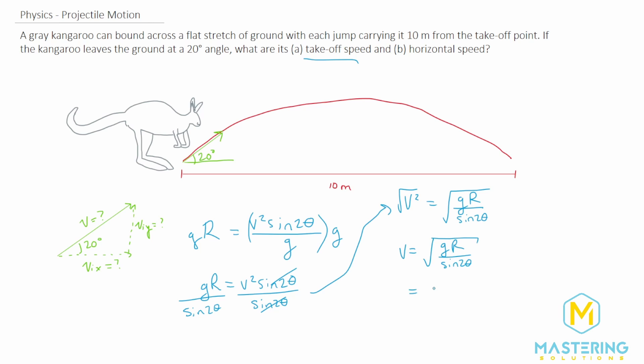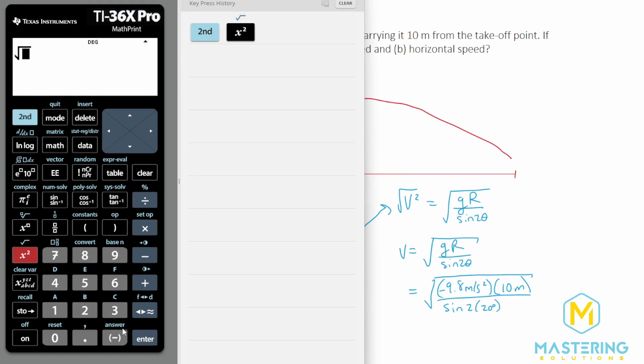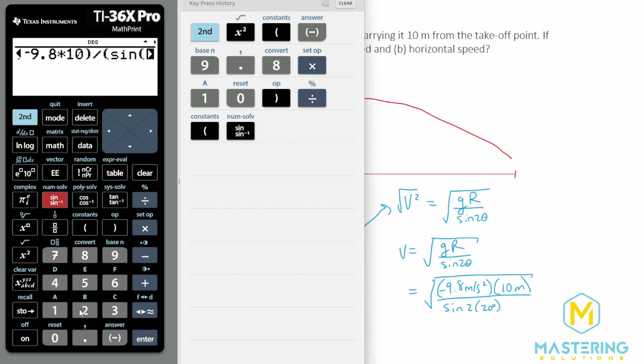So gravity will of course be a negative 9.8 meters per second squared. The range is 10 meters. We'll divide that by sine of 2 times 20 degrees. So we have the square root of negative 9.8 times 10 divided by sine of 2 times 20.